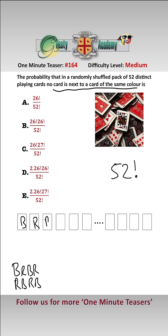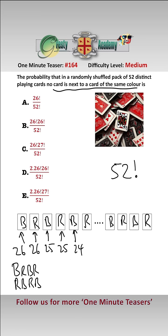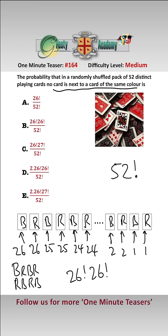Looking at black-red first: black-red-black-red-black-red... There are 26 possibilities for the first black and 26 for the first red, 25 for the next black and 25 for the next red, 24 for the next black and 24 for the next red, all the way down to 2 and 2, then 1 and 1. So the number of arrangements where black is first and they alternate is 26 factorial times 26 factorial.